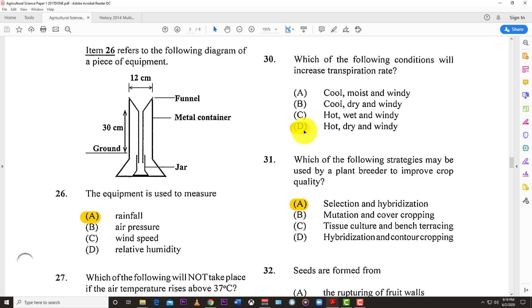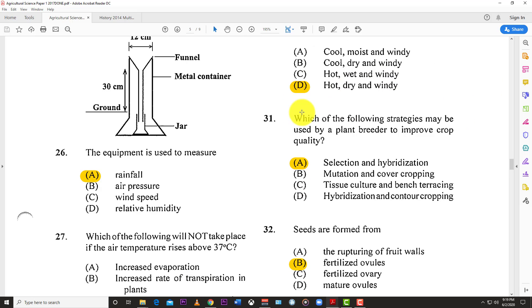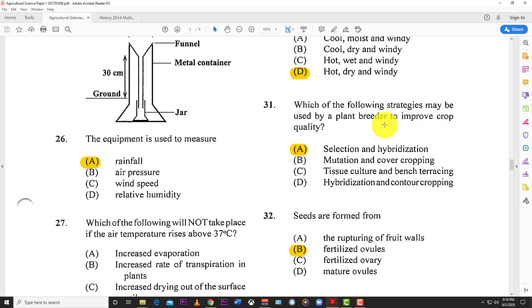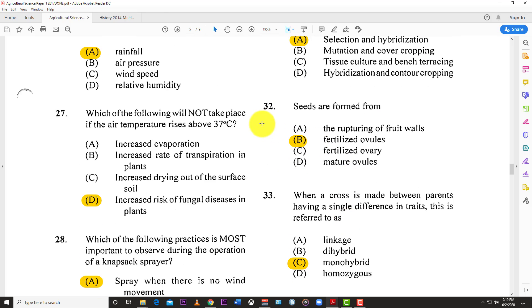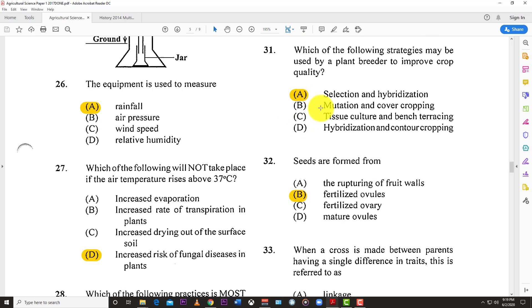Number twenty-nine: The type of germination where the cotyledons appear above the ground is known as epigeal germination. Number thirty: Which conditions increase transpiration rates? Hot, dry, windy would increase transpiration rates.